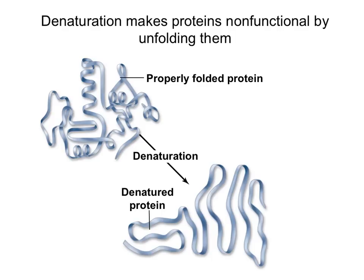So just as we said how important the structure of the protein is for its function, the same is true if the structure is lost. And that's what we call denaturation. So denaturing is when the protein unfolds. And this happens for mainly two reasons: either because of changes in pH, or if the protein is exposed to very high temperatures.